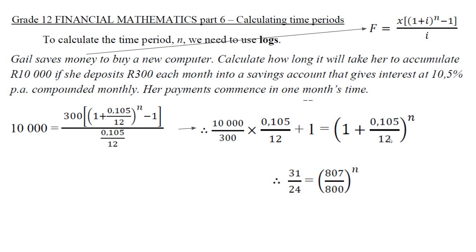You don't want to work out that. It's 807 over 800. Just type this into your calculator, and you'll get exactly the time, the amount of months that it will take.